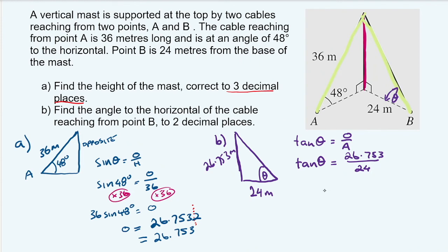Now, we want theta on its own. So we go theta equals the inverse of tan. So that's going to be our little minus one. Inverse of tan, 26.753 over 24.